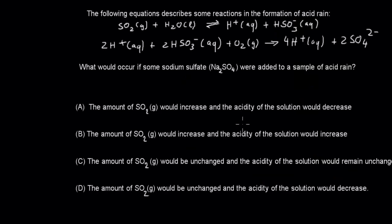Next question: the following equations describe some reactions in the formation of acid rain. SO2 + H2O → H⁺ + HSO3⁻, and 2H⁺ + 2HSO3⁻ + 2O2 → 4H⁺ + 2SO4²⁻. What would occur if some sodium sulfate were added to a sample of acid rain? A, SO2 increases and acidity decreases. B, SO2 increases and acidity increases. C, SO2 unchanged and acidity unchanged. D, SO2 unchanged and acidity decreases.